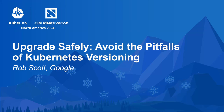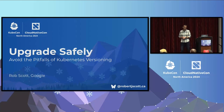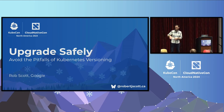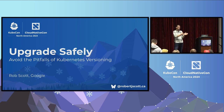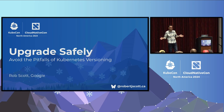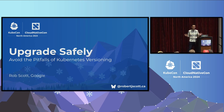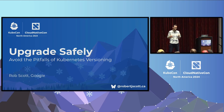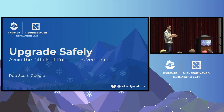My name is Rob Scott. I work at Google. I've been working on Kubernetes networking for a little over five years. Most recently, I've been doing a lot of Gateway API things, and I'll be using some Gateway API examples. Before I worked on Kubernetes, I spent a lot of time as an end user actually trying to run the thing, so I'm very familiar with some of the painful things that can happen when things don't go quite as you'd expect.